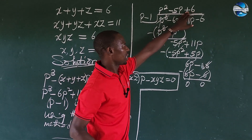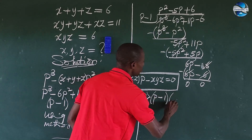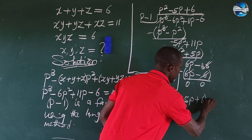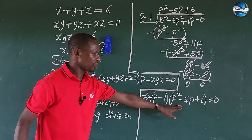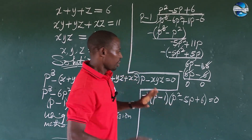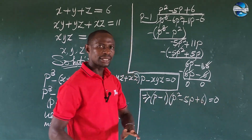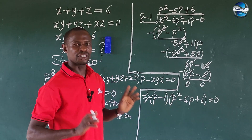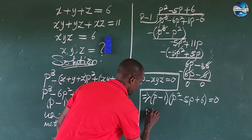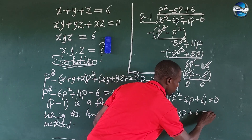This is our quadratic equation now. We can write the expression as P minus 1, times P squared minus 5P plus 6, all equal to 0. This is a quadratic equation we can solve. Taking factors of 6 that multiply to give plus 6 and add to give minus 5, we get minus 2 and minus 3.